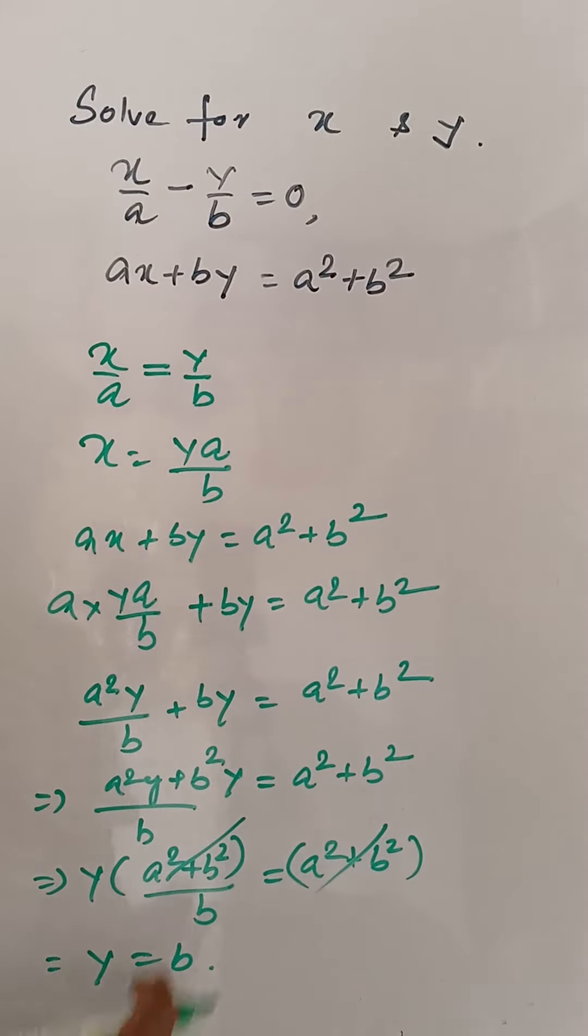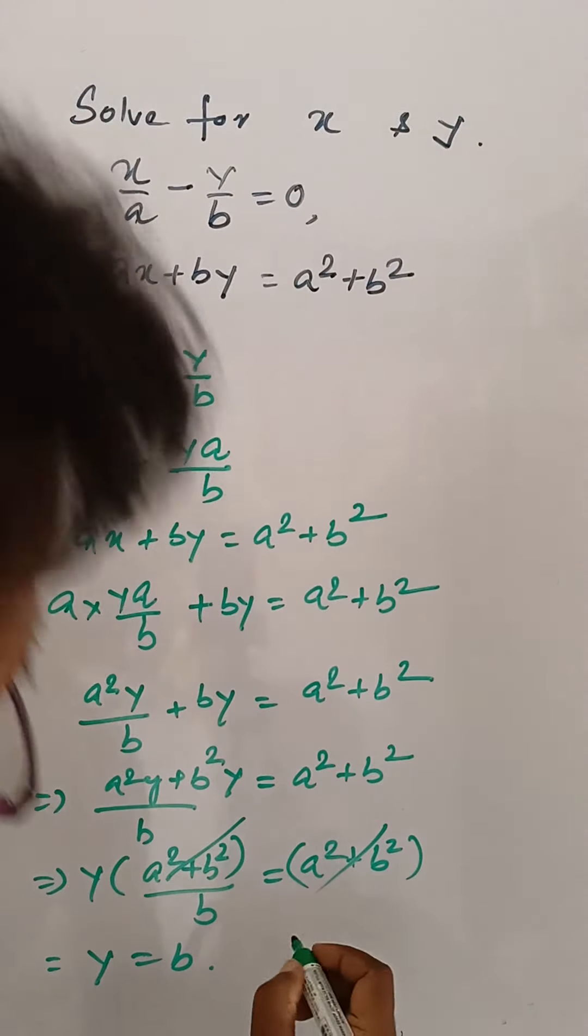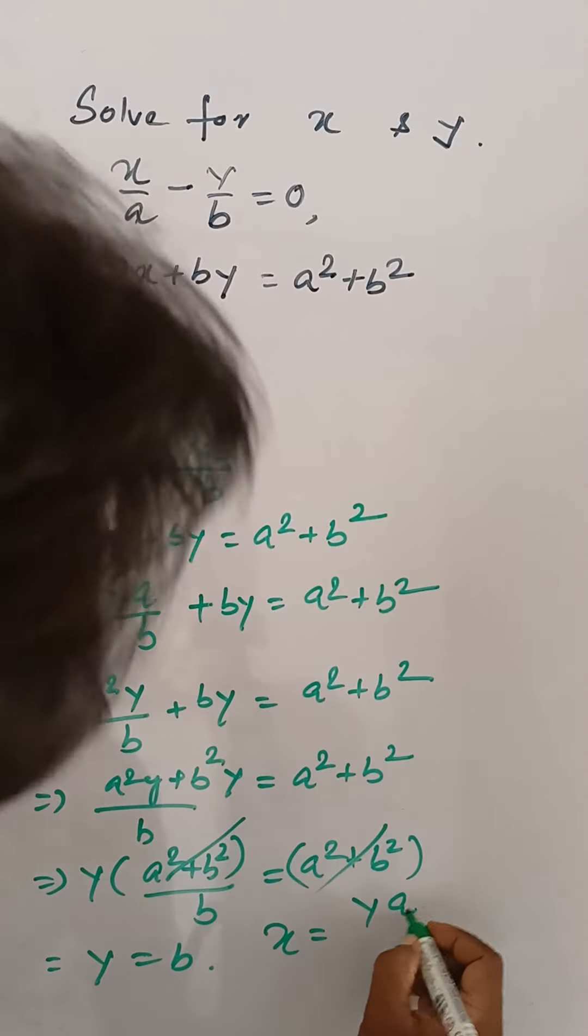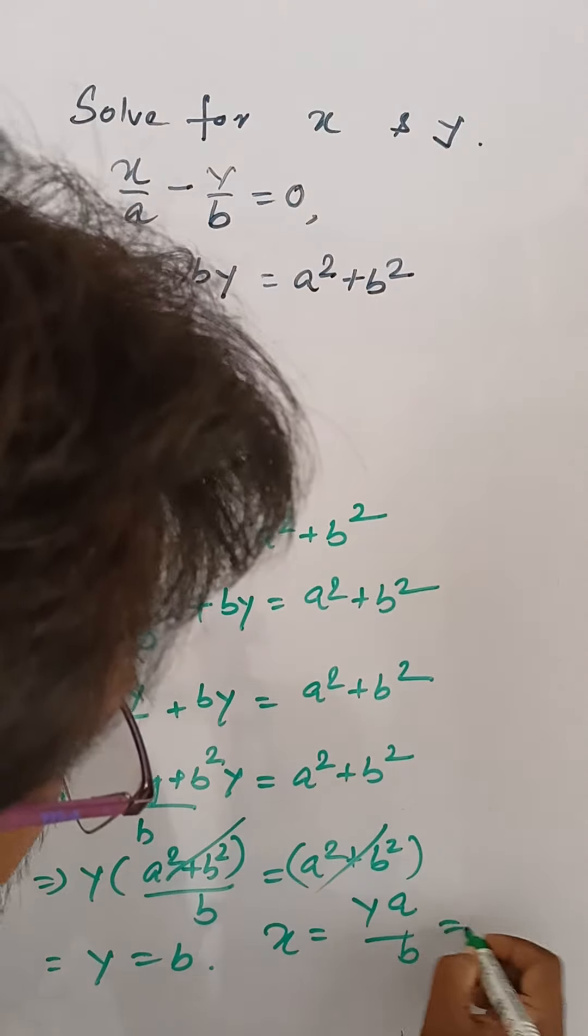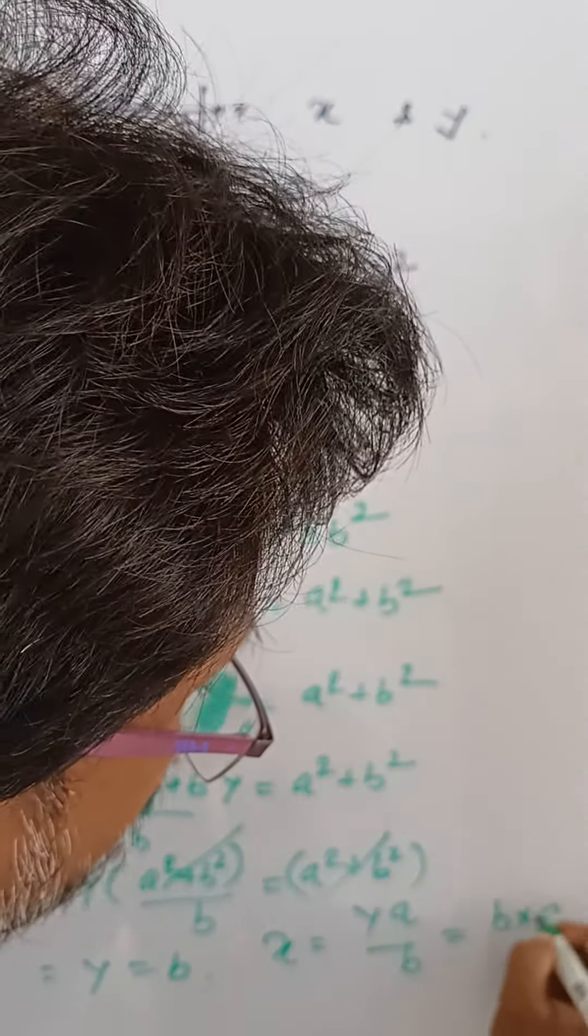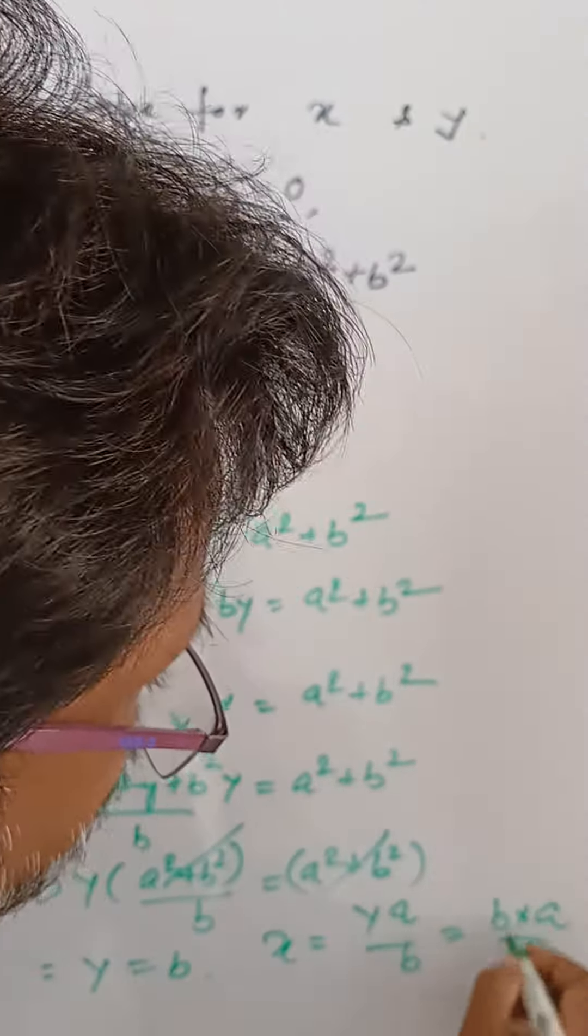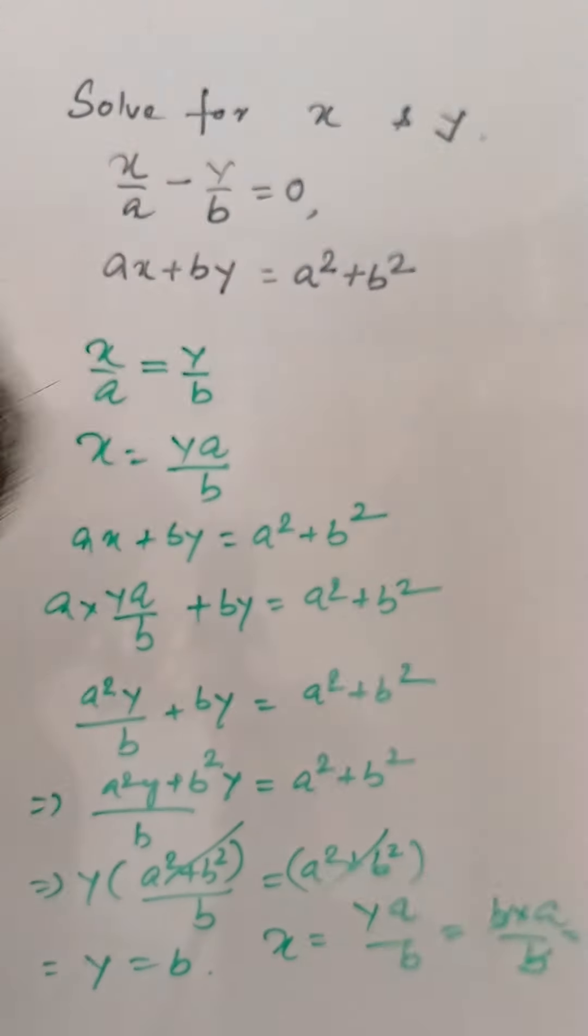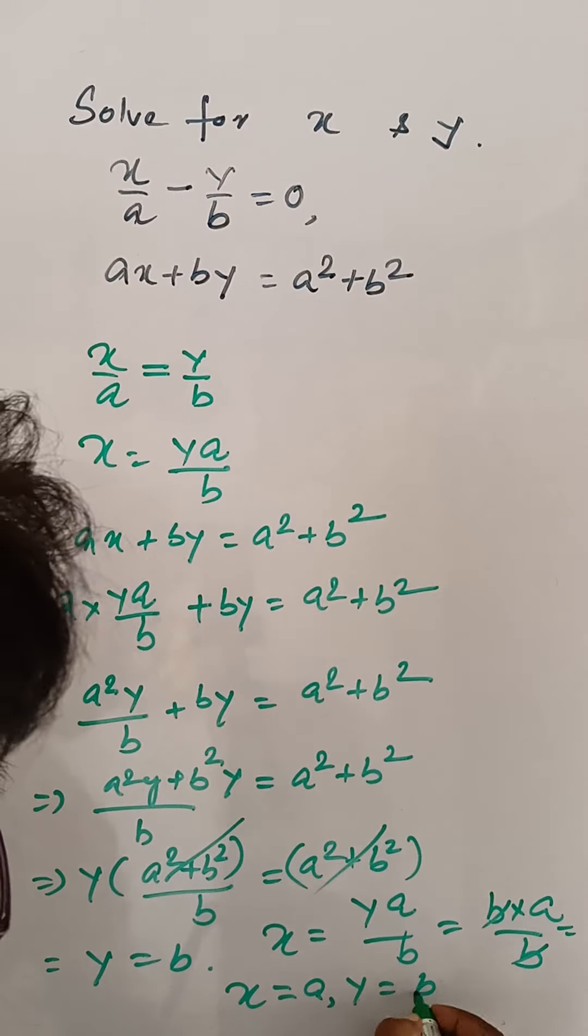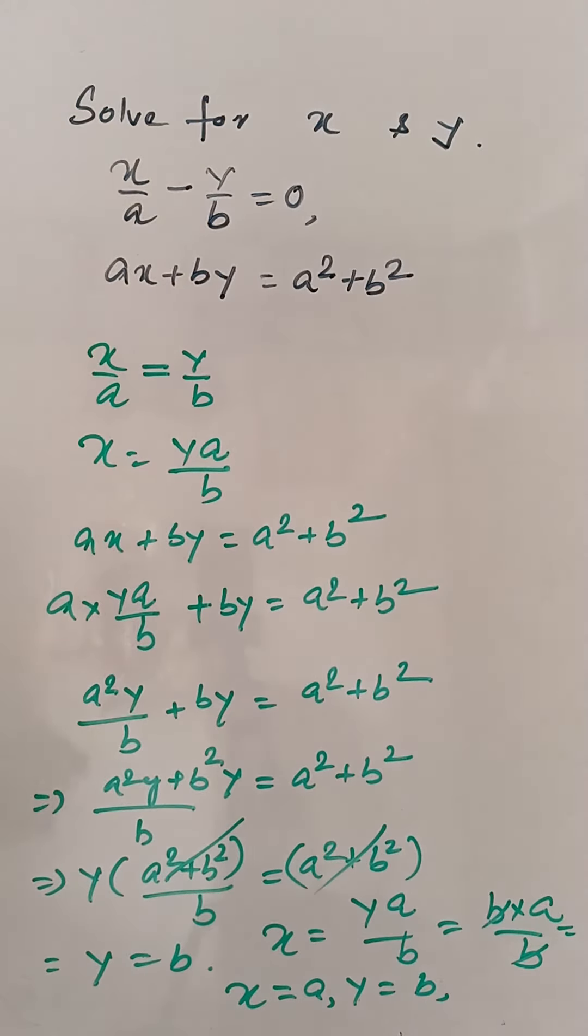If y = b, then we can find x. We have x = ya/b. Substituting y = b: x = ba/b. The b cancels, giving x = a. Finally, x = a and y = b. The answer.